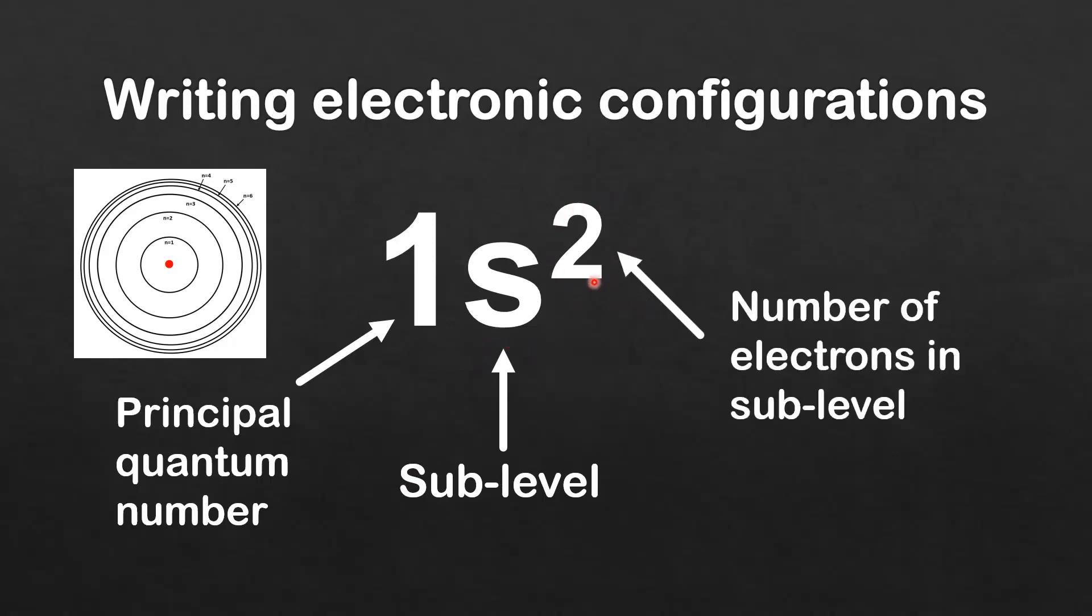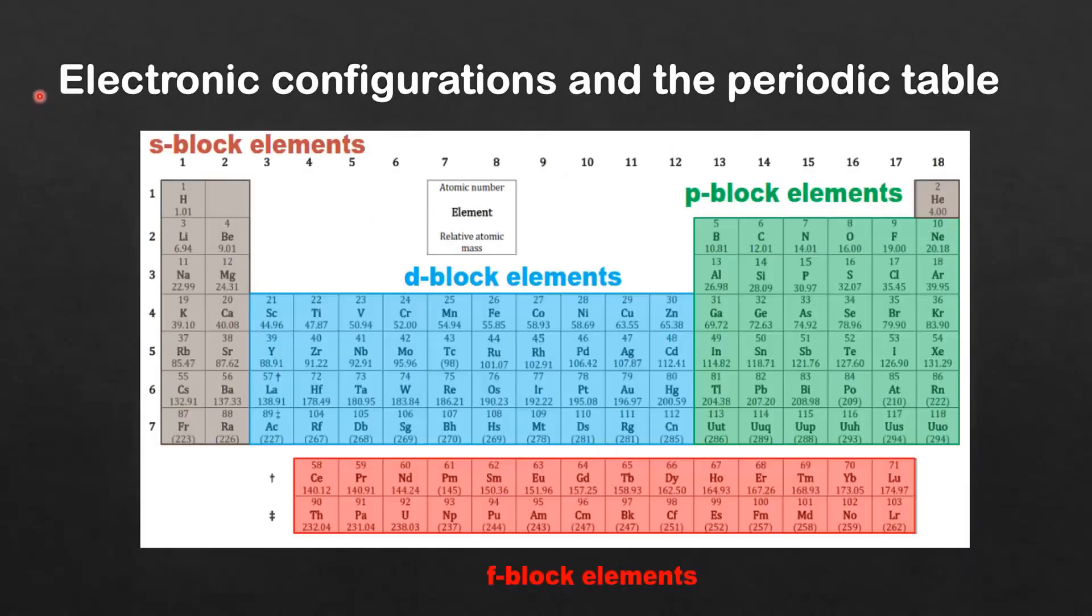The number in subscript tells you the number of electrons in the sublevel. So this electronic configuration tells us that we have two electrons in the s sublevel in energy level 1.